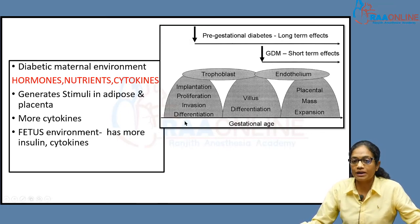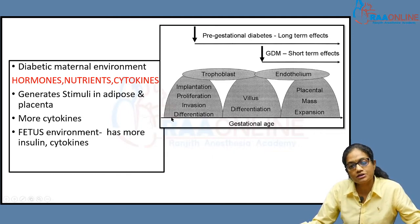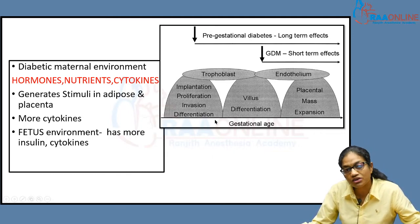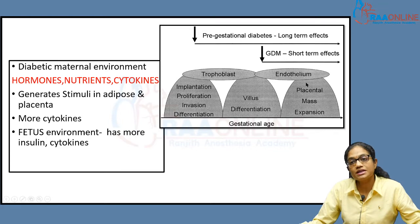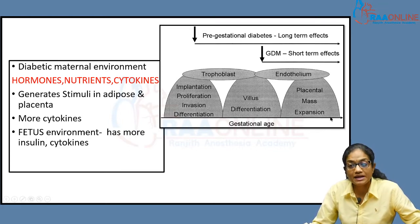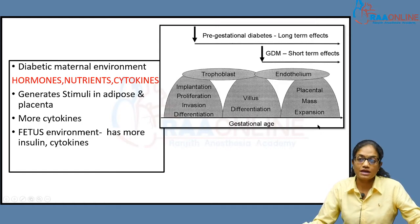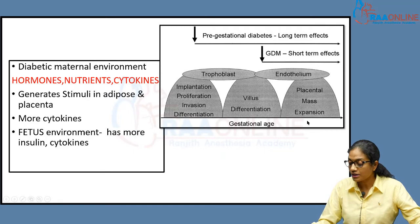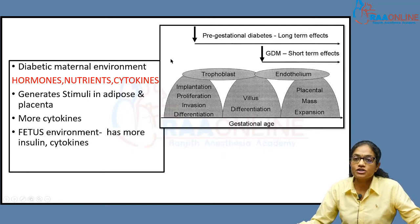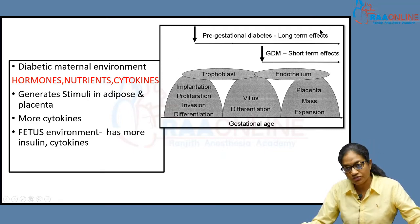If you concentrate on this half of the slide, there is pre-gestational diabetes which is already present. Right from the point of implantation, proliferation, and invasion, the baby and the placenta are going to be affected — trophoblastic invasion is affected and villus differentiation is affected. If gestational diabetes starts at the end of the first or second trimester, it affects placental mass and vasculature function at every stage of placental formation.